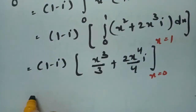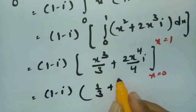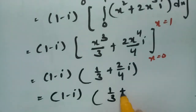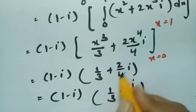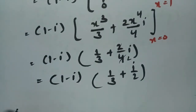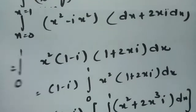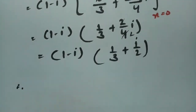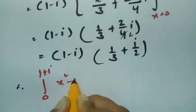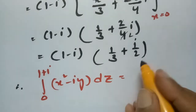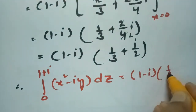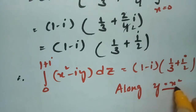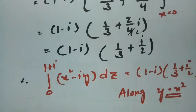Substituting the limits x = 0 to x = 1, we get (1 - i) times (1/3 + i/2). Therefore, the integral from 0 to 1+i of (x² - iy) dz = (1 - i)(1/3 + i/2) along the path y = x², the parabola.